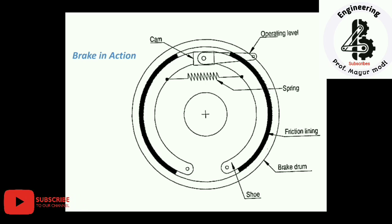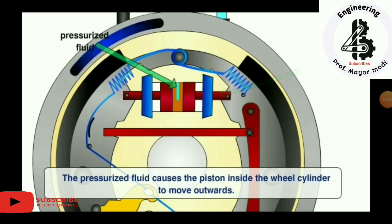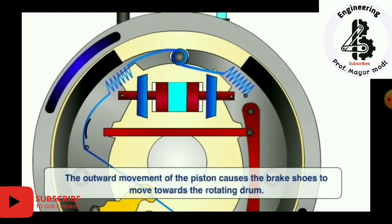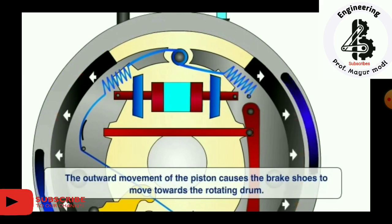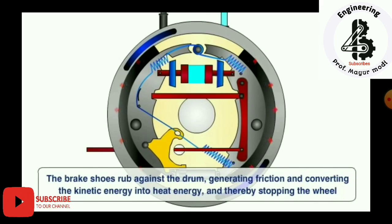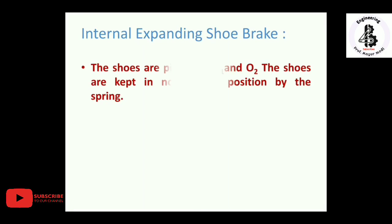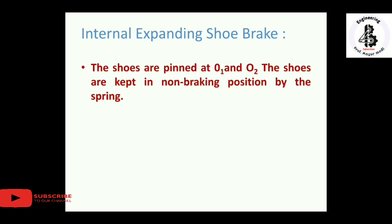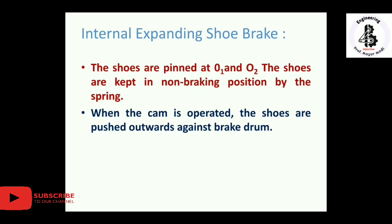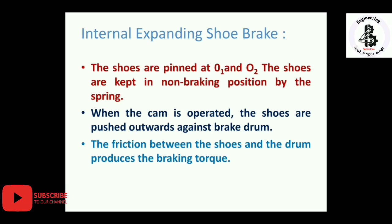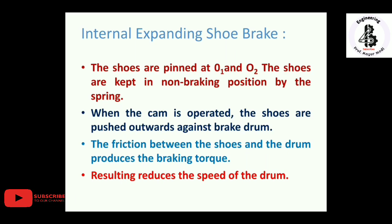In the animation view of internal expanding brakes: the shoes are pinned at O1 and O2 and kept in non-braking position by spring force. When the cam is operated, the shoes are pushed outward against the brake drum. The friction between the shoe and the drum produces a braking torque, resulting in reduced speed or stopping of the drum.